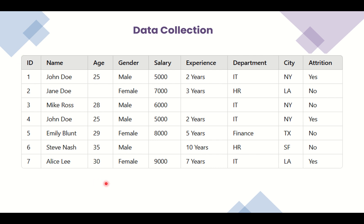For example, we collected this data. In the data, you can see we have different columns — from the column ID to CT, these are the independent columns, and the last column, attrition, is the dependent column. It means that this column depends on all the values of the other columns. For example, we have a user with age 25, gender male, 70, 5000, and this column shows us whether the employee will leave the company or not.